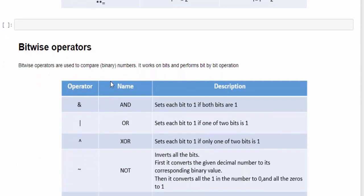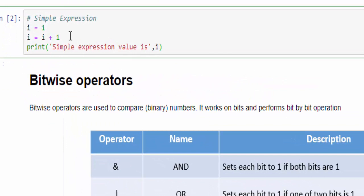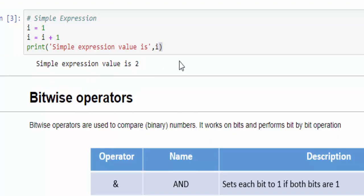Let's see an example so you will get more clarity. This is a simple expression: i equal to 1 is the assignment operator. Then I am creating i equal to i plus 1. During execution, 1 will be added to this expression, so we will get the output i equal to 2. The value is 2.